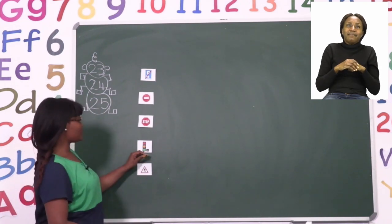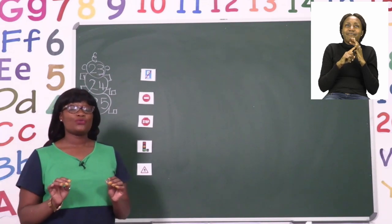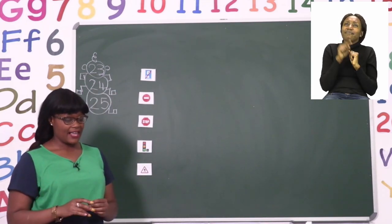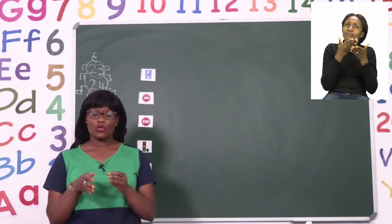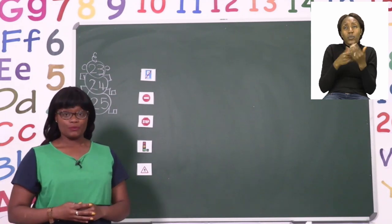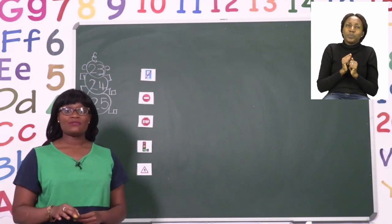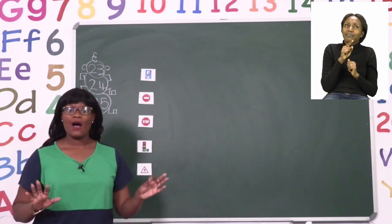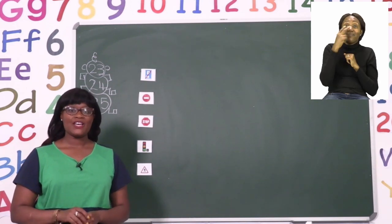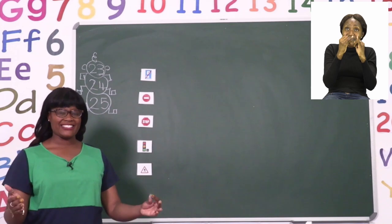The second from last is a traffic light sign. This one allows us to either go, stop, or prepare to stop. This traffic light we can see all over our cities and towns. So the next time you see a traffic light, you know that it's telling you something as the light changes.